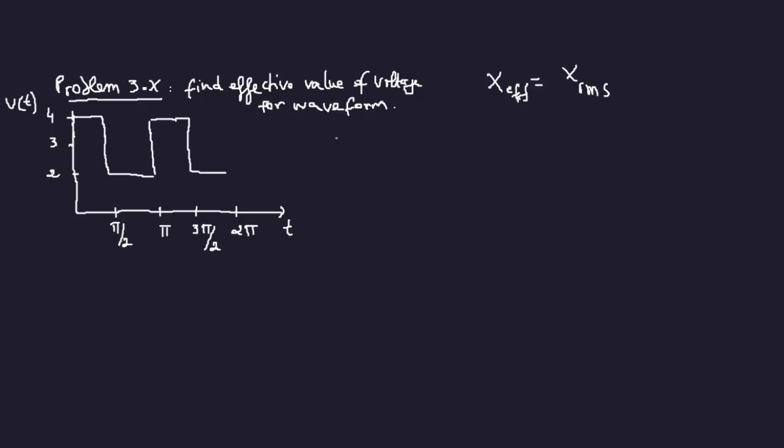So from the handbook I have x_eff is equal to x_rms is equal to one over t, because I have a square there, one-half so it'll be square root. I have 1/t integral from zero to t of x squared dt.